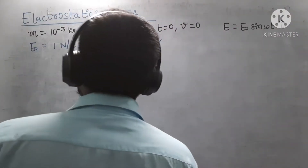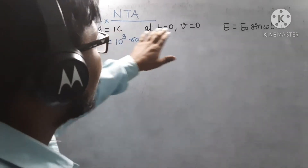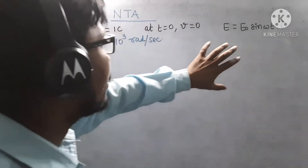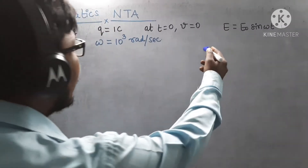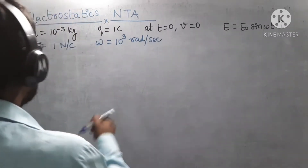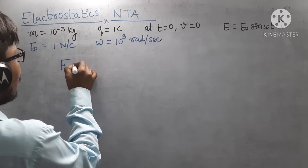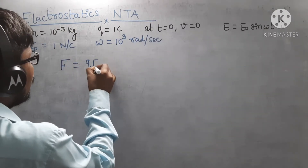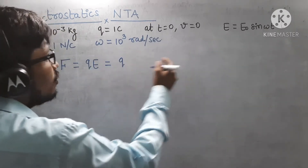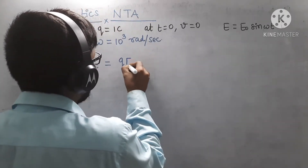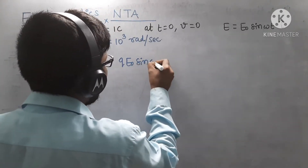You can easily calculate the force on that charged particle. The force F = QE, so substituting the value of E, we get F = Q × E₀ sin(ωt).